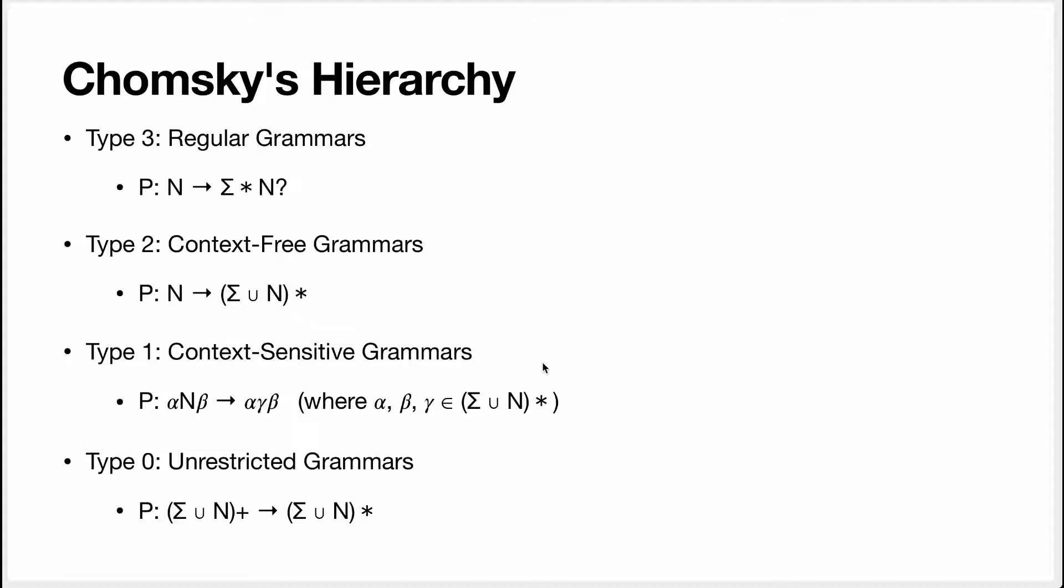For type 1 grammars, you can see that on the left we no longer just have the non-terminal, we also have alpha and beta. These things are a string of symbols. And you see that we only replace N though. So alpha and beta are present on the left and on the right. They represent the context which stays fixed while we do a replacement. For type 0 grammars, we can basically rewrite anything into anything.